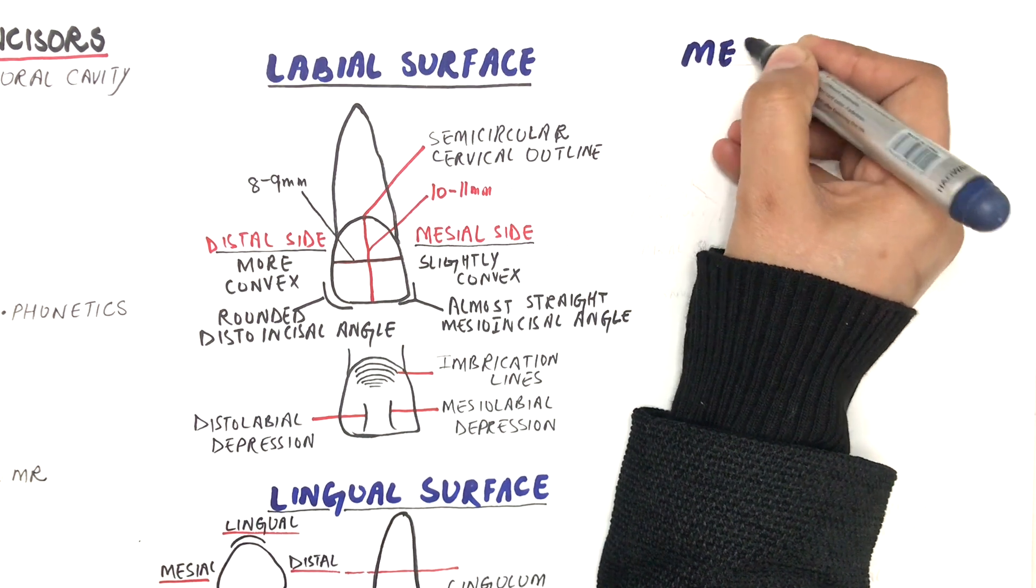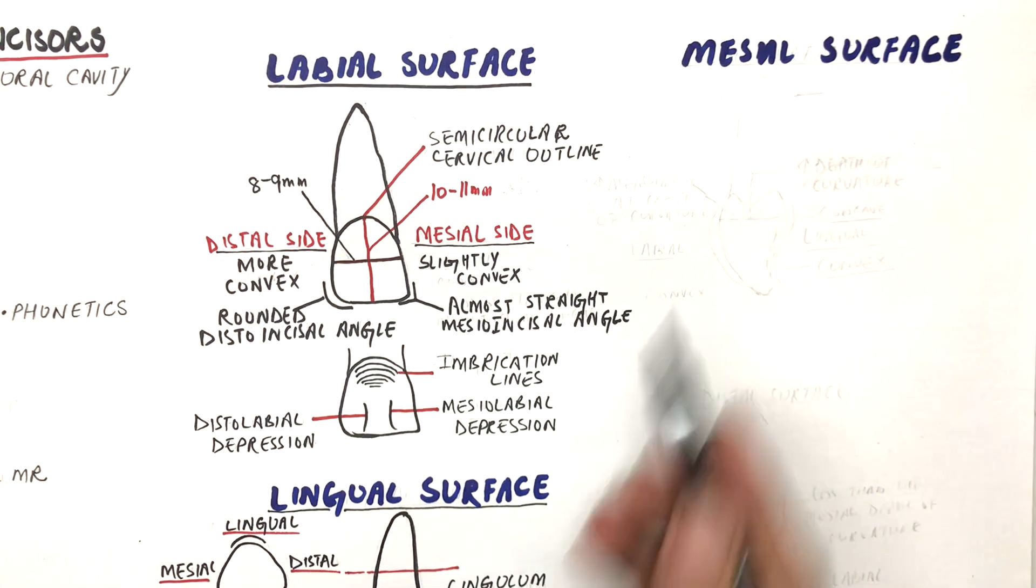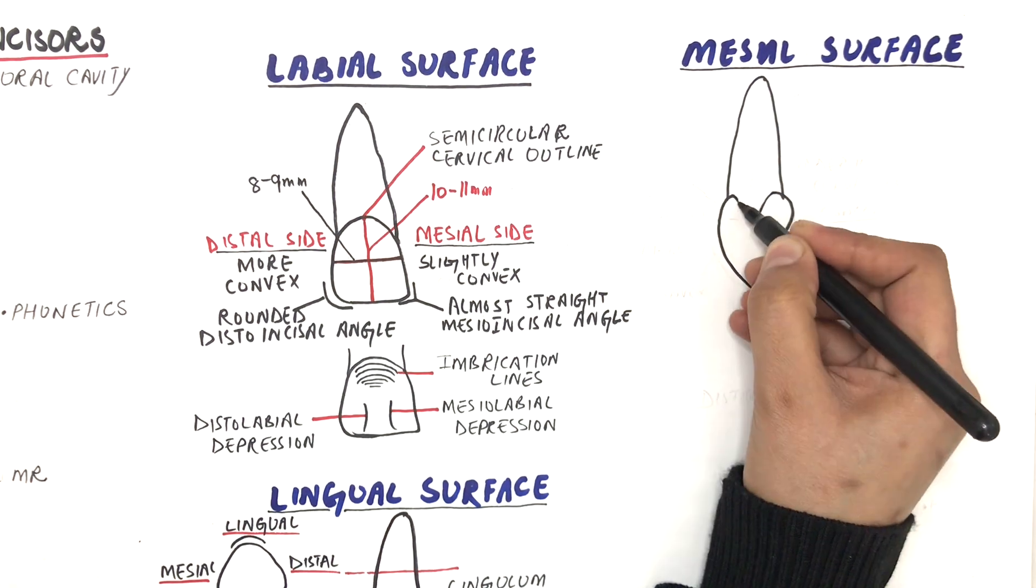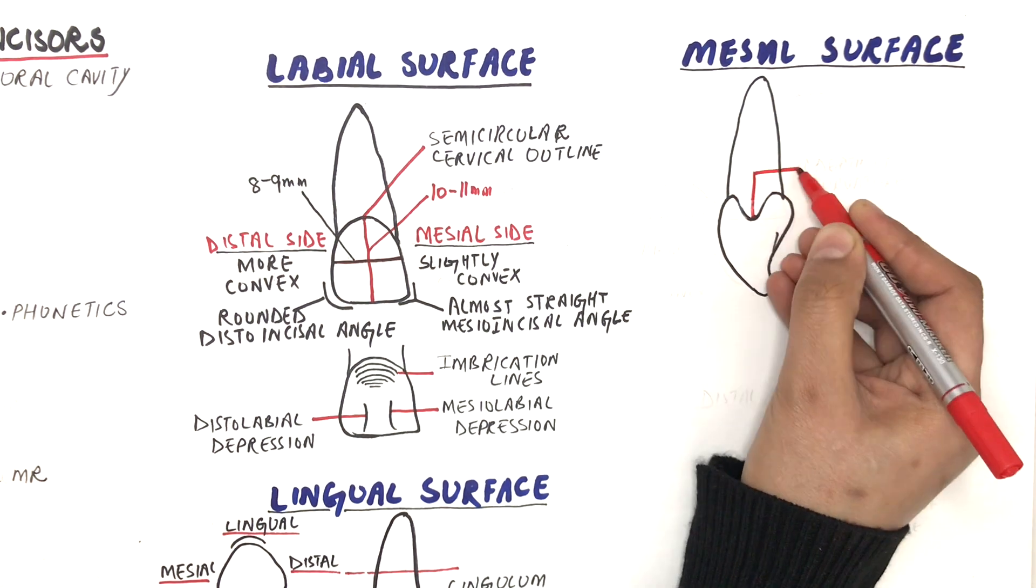From the mesial aspect, the crown of the maxillary central incisor is triangular or wedge-shaped with the base of the triangle at the cervix and the apex at the incisal edge. The cervical line at the mesial aspect is curved towards the incisal edge, having the highest depth of curvature of all teeth in the oral cavity.